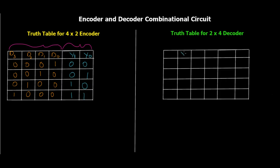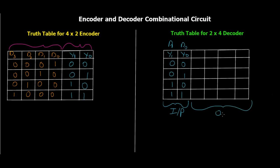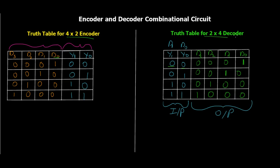The truth table for the decoder is exactly opposite. The input columns are D0 and D1 (corresponding to Y0 and Y1 from the encoder), with combinations 00, 01, 10, and 11. The four output columns are D0, D1, D2, D3. For input 00, D0 is activated (output 1000); for input 01, D1 is activated (output 0100); for input 10, D2 is activated (output 0010); and for input 11, D3 is activated (output 0001).